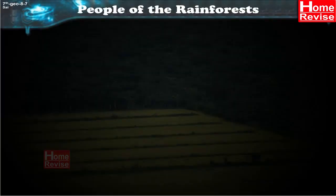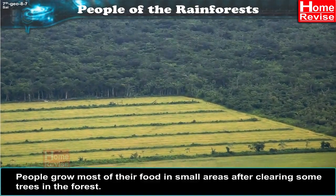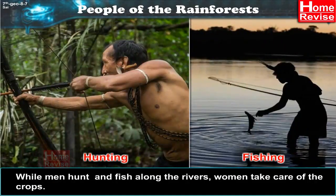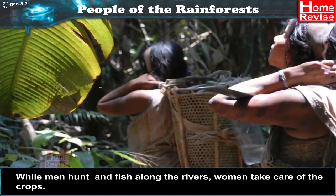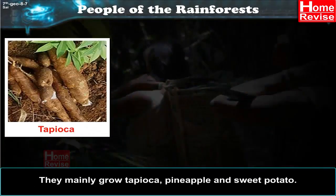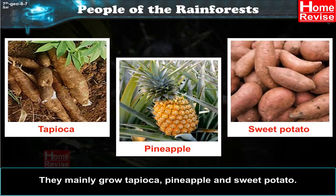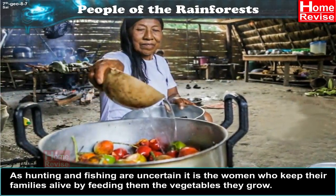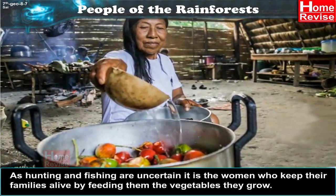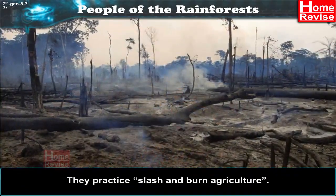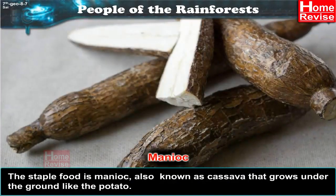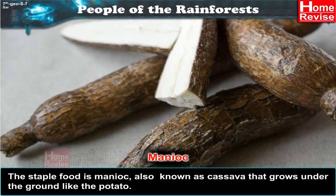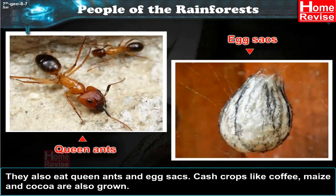People of the Rainforest. People grow most of their food in small areas after clearing some trees in the forest. While men hunt and fish along the rivers, women take care of the crops. They mainly grow tapioca, pineapple, and sweet potato. As hunting and fishing are uncertain, it is the women who keep their families alive by feeding them the vegetables they grow. They practice slash-and-burn agriculture. The staple food is manioc, also known as cassava, that grows under the ground like the potato. They also eat queen ants and egg sacks.